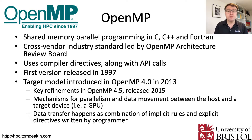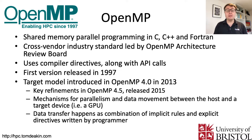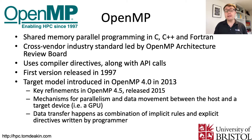OpenMP has been around since 1997. In 2013, the target model was introduced in OpenMP 4.0, allowing OpenMP to target accelerated devices such as GPUs. Important refinements came in OpenMP 4.5 — the version I'm primarily focusing on today. It provides mechanisms for both parallelism and data movement between the host and the target device, with directives to define how parallelism maps to accelerated architectures and how data moves from host to device and back.